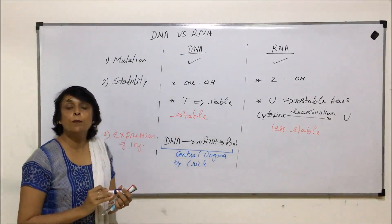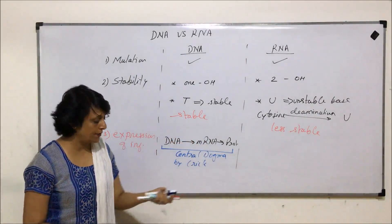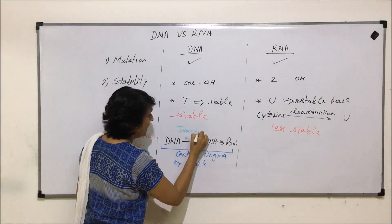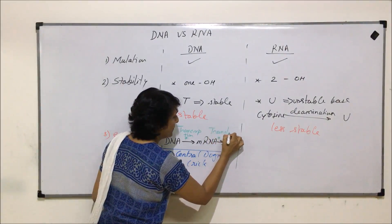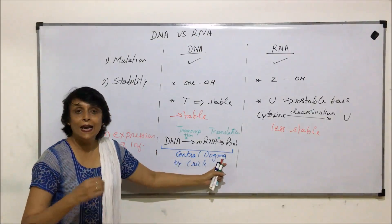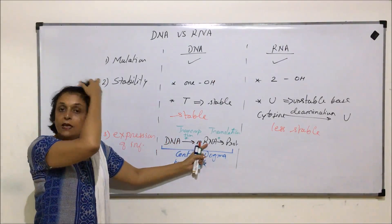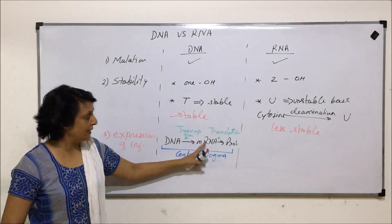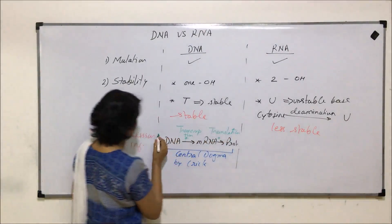This is how proteins are synthesized from the information present on DNA. DNA first undergoes transcription to produce mRNA, and from mRNA the protein synthesis process is known as translation. The information on DNA is interpreted in two steps: first, DNA is transcribed to hnRNA, which undergoes splicing, capping and tailing to give mRNA, and then protein synthesis takes place.